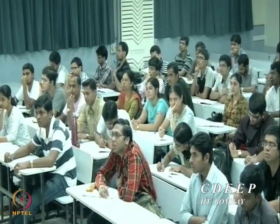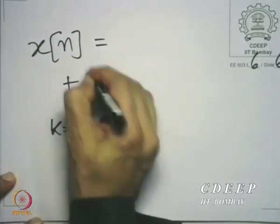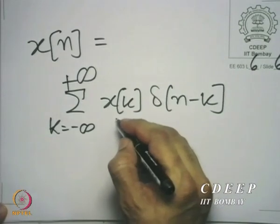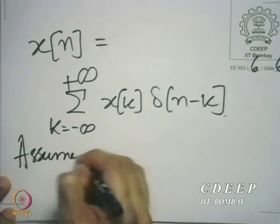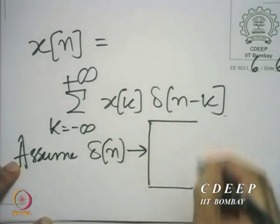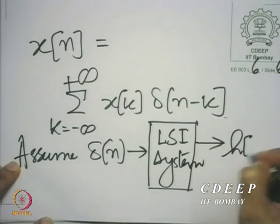If there are any questions on the way, you must ask them then and there. So in effect, x(n) — the whole sequence — is a summation over all integer k of x(k)·delta(n−k). Note: x(k) is a constant, delta(n−k) is a sequence. We assume that when we put delta(n) into this LSI system, we get a sequence h(n) emerging as the output — the unit impulse response, the response of the system to a unit impulse.